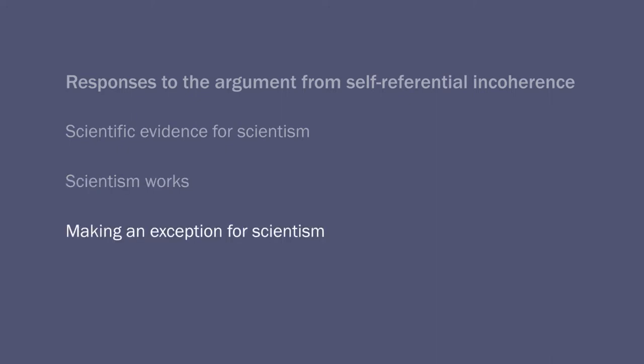An equally controversial reply is the reply that says, scientism is true and we should make an exception for scientism itself. So something counts as knowledge only if it's based on science, except for the thesis of scientism itself. That is a piece of knowledge, an instance of knowledge, even though it's not based on actual science. That's what one could say, but of course this is going to be controversial because it seems so ad hoc, right? Why make an exception only for scientism itself? On what basis?